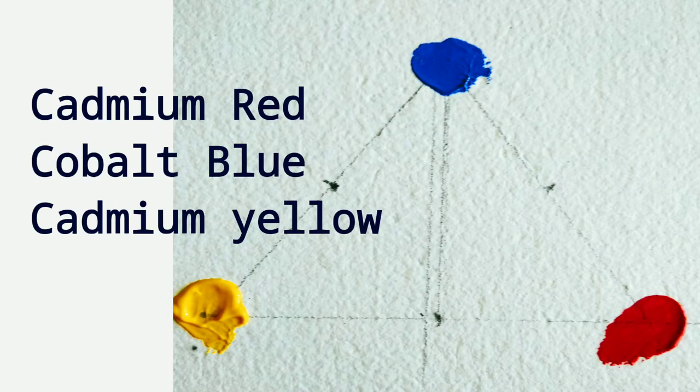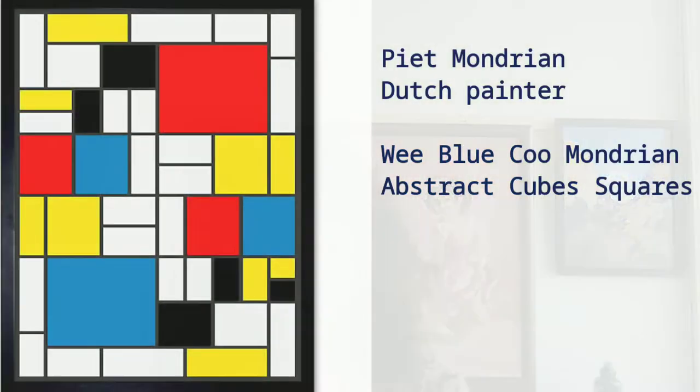What are primary colors? Primary colors are colors we can't make. Blue, red, and yellow are primary colors. The question is, can we make a beautiful painting or design using only primary colors? Yes, the answer is yes, we can.